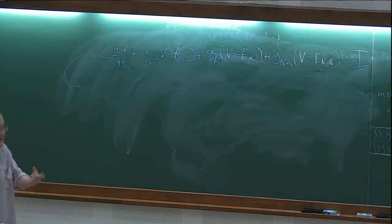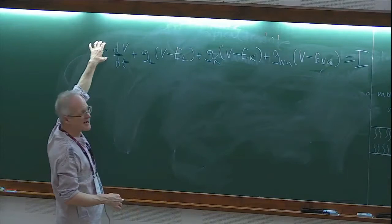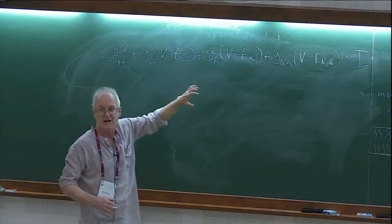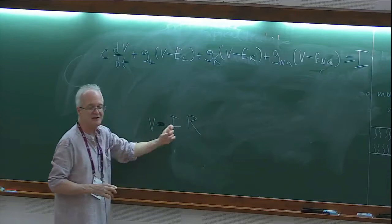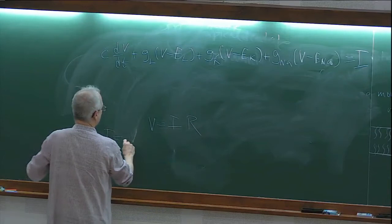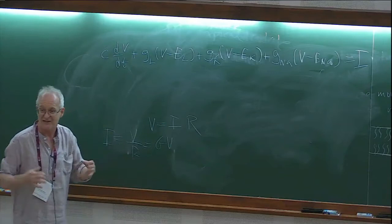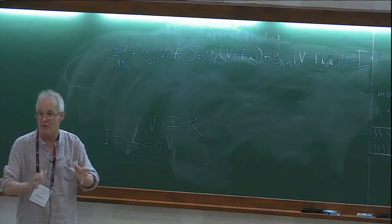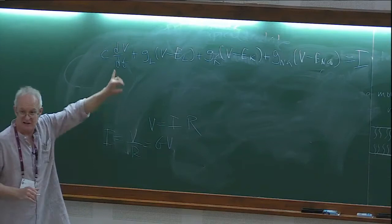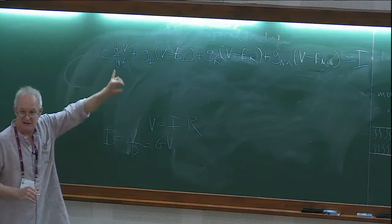I is the input current — the current inside the cell. Capacitance times the derivative of voltage is a current. Conductance times voltage is current — this is just V = IR, so I = V/R = gV, where g = 1/R is conductance. V is typically in millivolts, C is typically in microfarads per centimeter squared. The membrane capacitance is pretty much constant across all neural tissue at one microfarad per centimeter squared, so we usually ignore it.